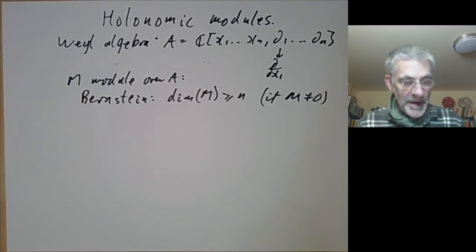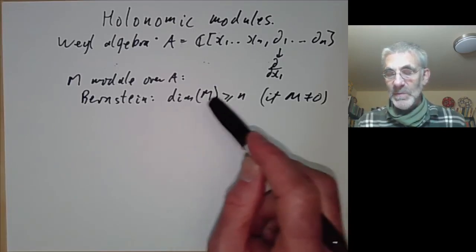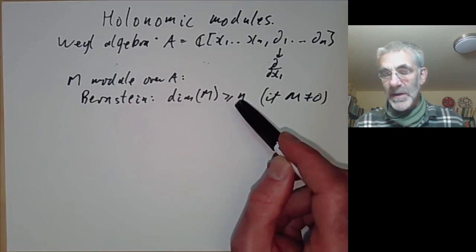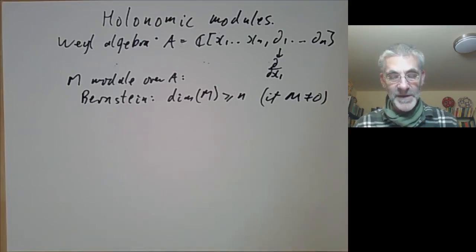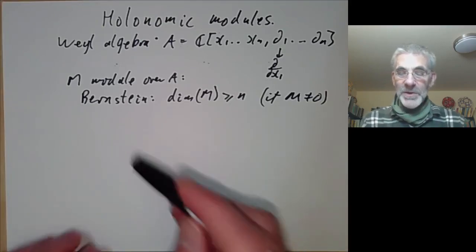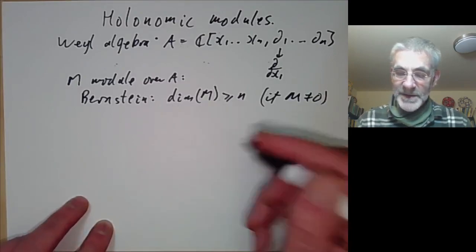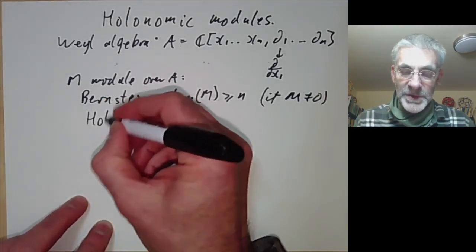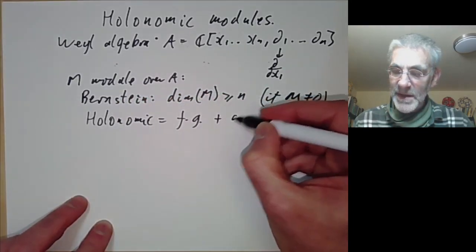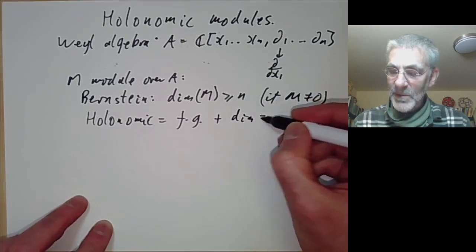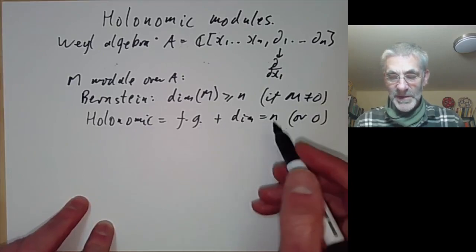In the commutative case, modules have dimension at least zero, and the modules of dimension zero are all of finite length, at least if they're finitely generated. What we want to do is show that something similar holds here — that the modules of finite length are the holonomic modules. Holonomic means finitely generated plus dimension equals n, or zero. The zero module is also considered to be holonomic.